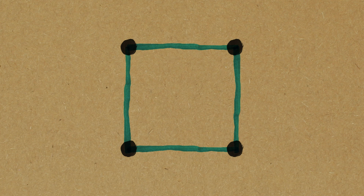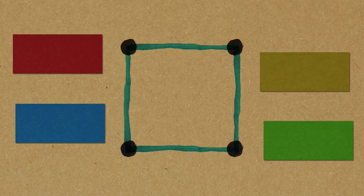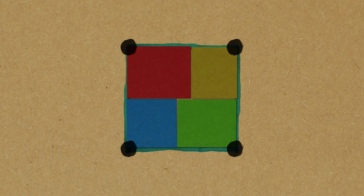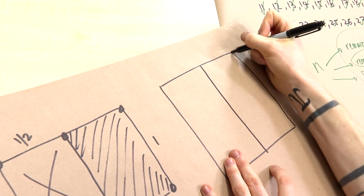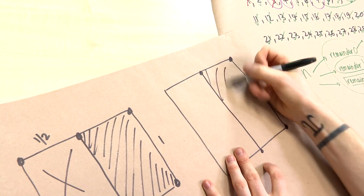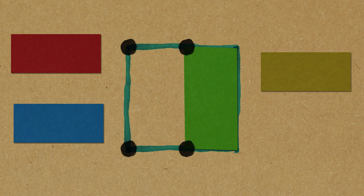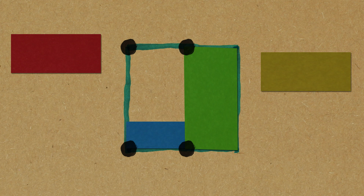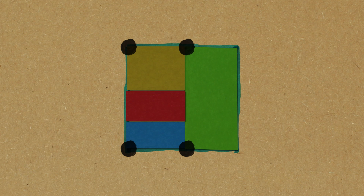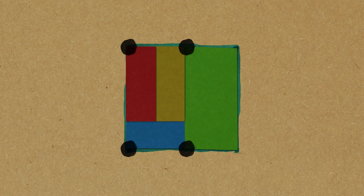For n equals four, the same corner argument applies. One rectangle must touch two corners, dividing the square in half. Now we have three rectangles left to fill a half-rectangle. Again, one must touch two corners, giving a half-by-quarter rectangle. We're left with the same awkward space: whether you go horizontally or vertically, you end up with dimensions in a ratio of one to three, not one to two. So n equals four is also impossible.